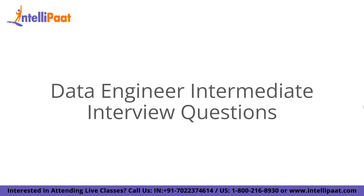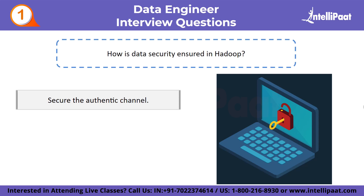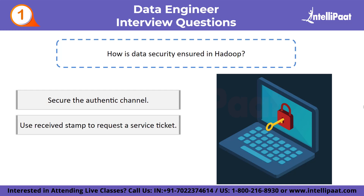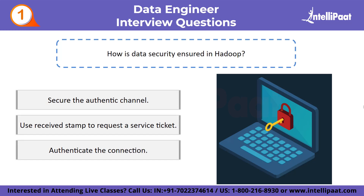Let us move on to data engineer intermediate interview questions. First: how is data security ensured in Hadoop? Some of the steps involved in securing data in Hadoop are as follows. First, you must secure the authentic channel that connects clients to the server. Second, the clients use the received stamp to request a service ticket. Finally, the service ticket is used by clients to authenticate their connection to the corresponding server.